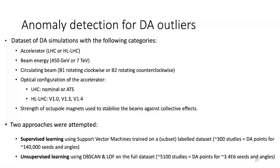Since these outliers may represent unlikely configurations, it might be useful to remove them from the analysis to compute the minimum DA. The dataset used was large and varied: different machines (LHC or HL-LHC), different energies (injection or flat top), different beams, different optical configurations (nominal or ATS for LHC, different versions for HL-LHC), and different octupole magnet strengths.